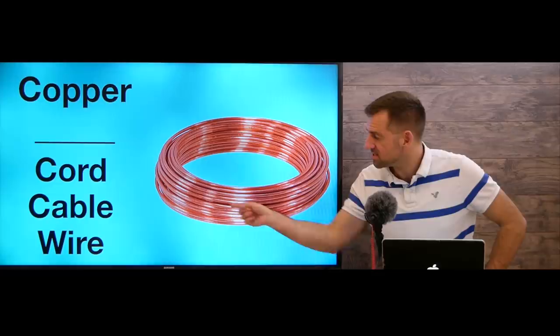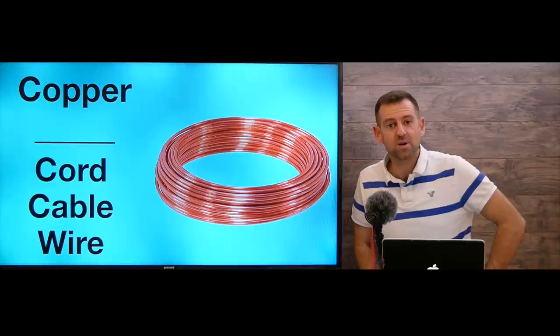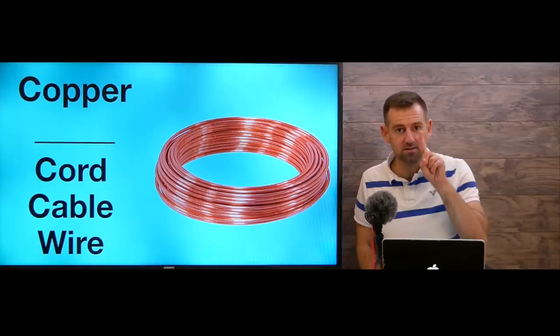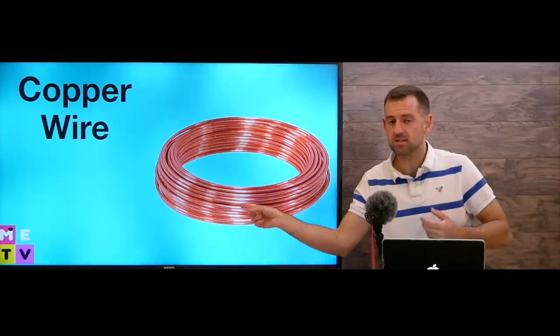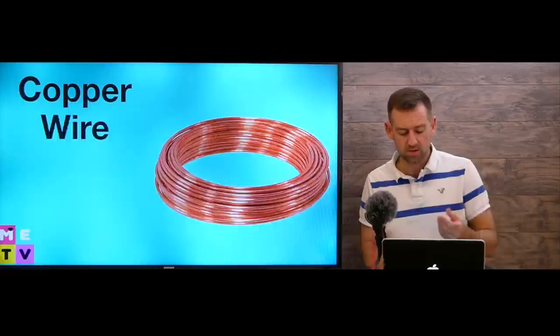This stuff is called copper — copper cord, copper cable, or copper wire? One, two, three. The answer is copper wire. It's called copper wire. This color is called copper, and the material is also called copper — it's a kind of metal.